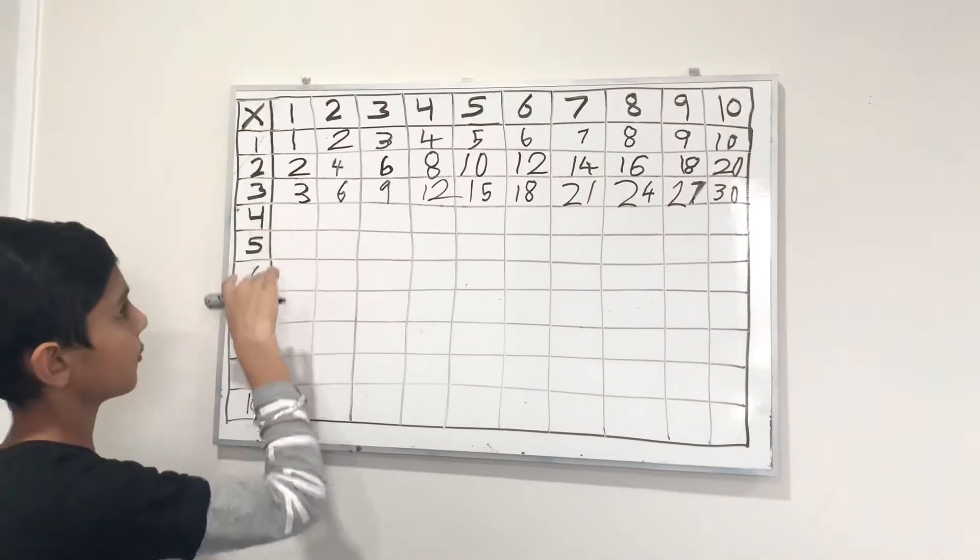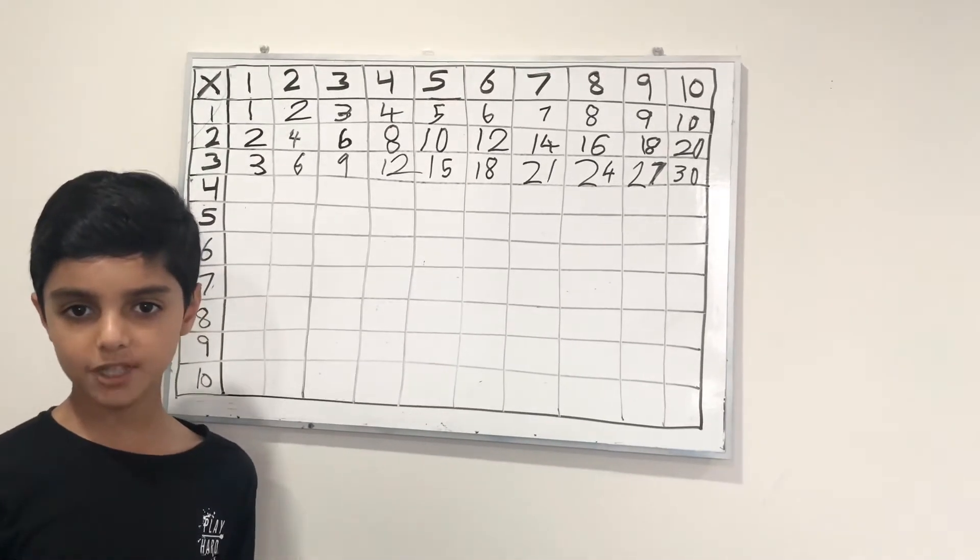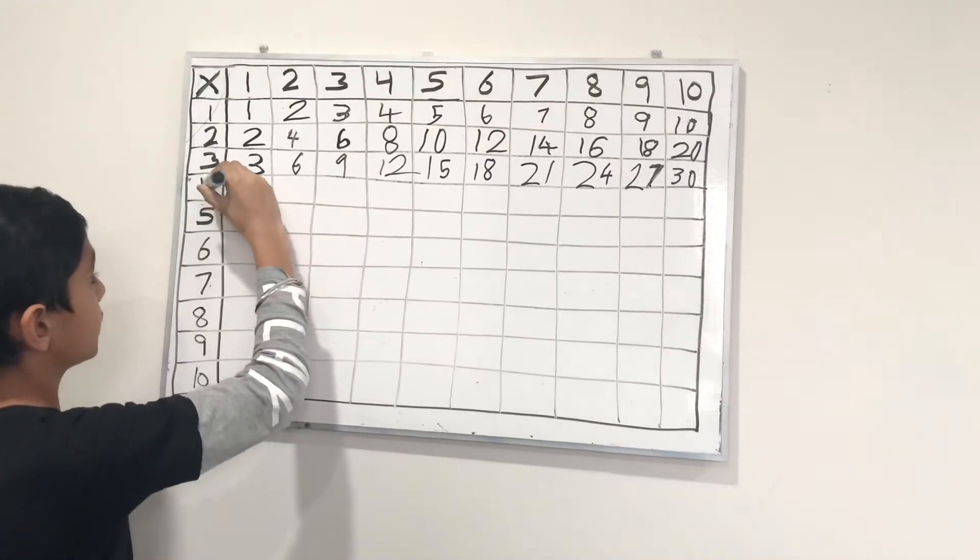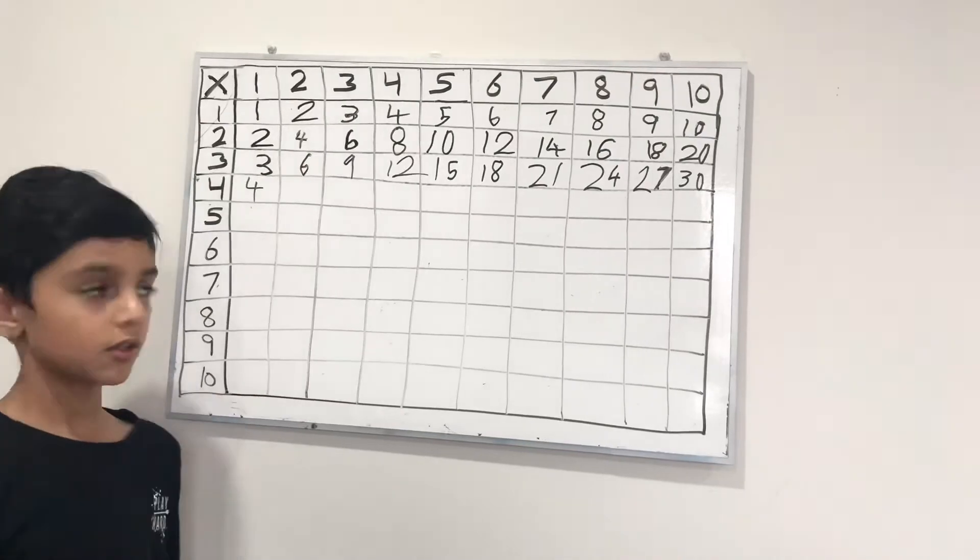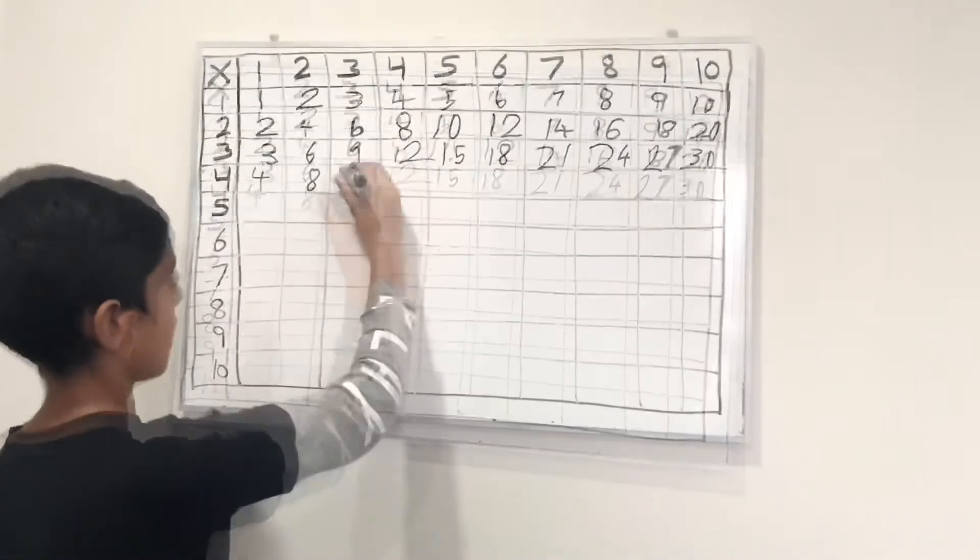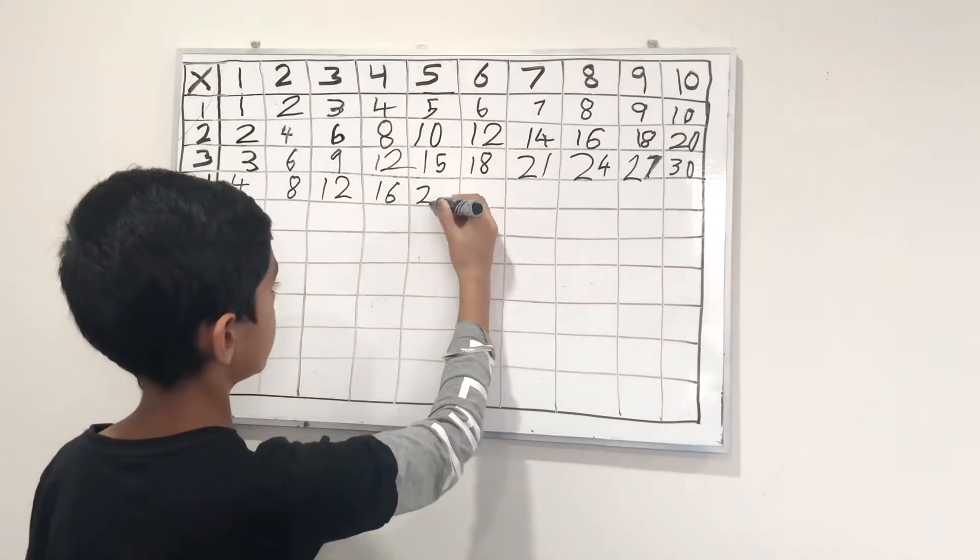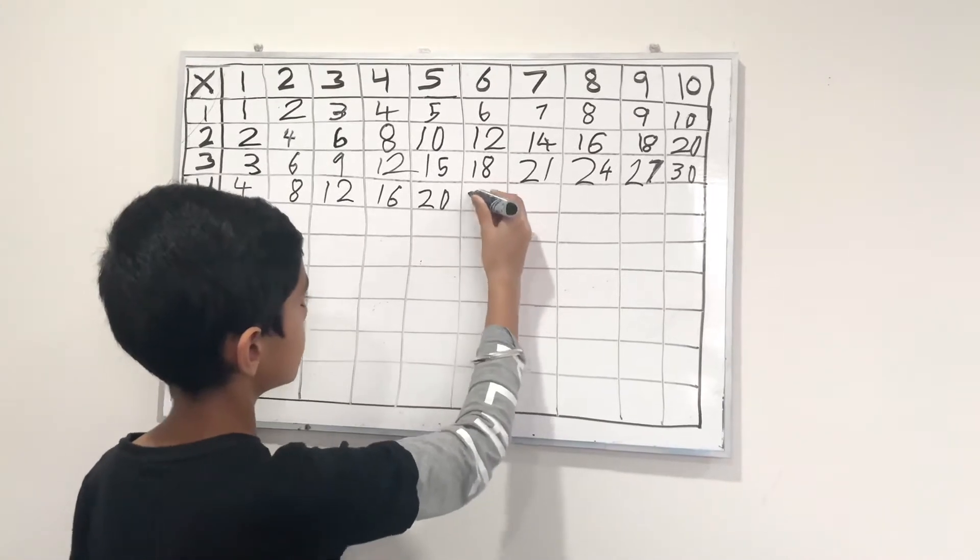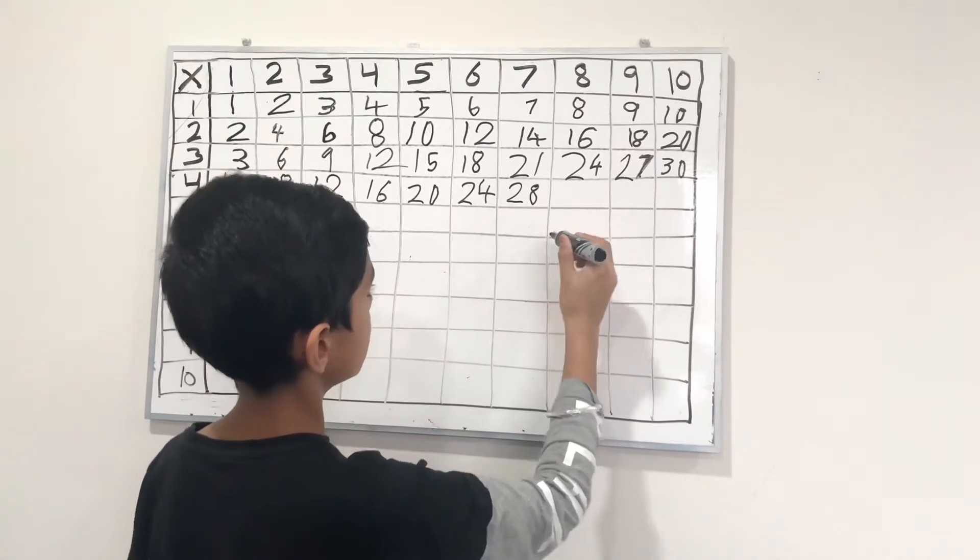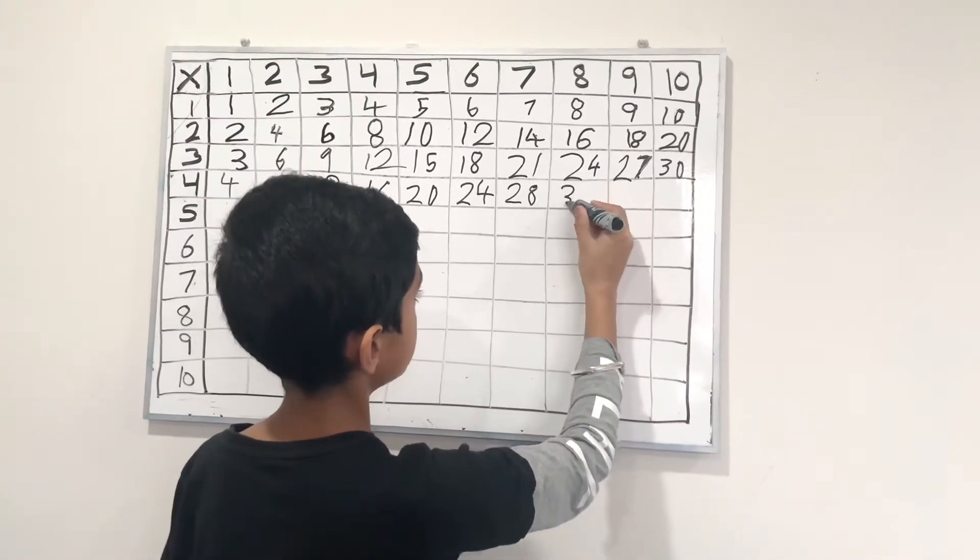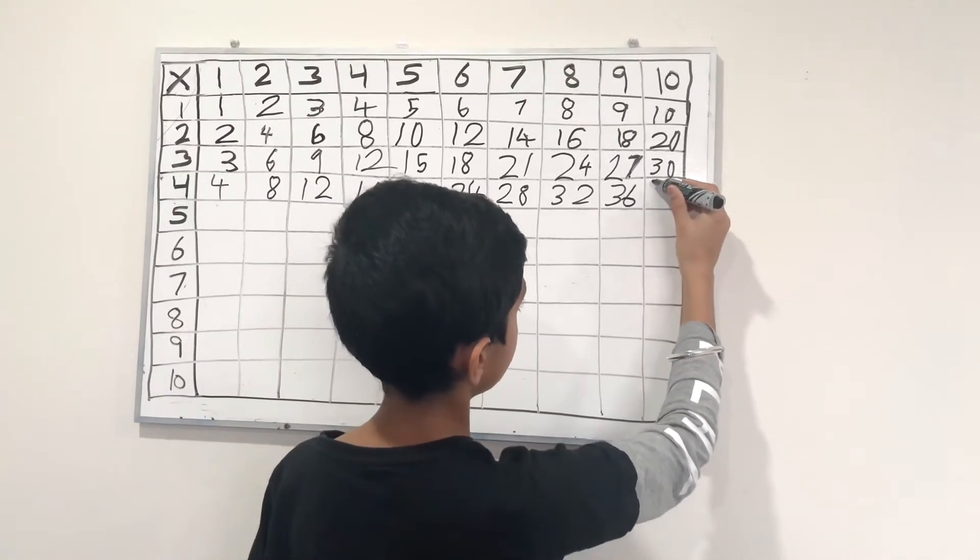Now let's do the table of 4, and using the same logic, I will write all the numbers. 4 times 1 is 4, 4 times 2 is 8, and then 12, 16, 20, 24, 28, 32, 36, and then 40.